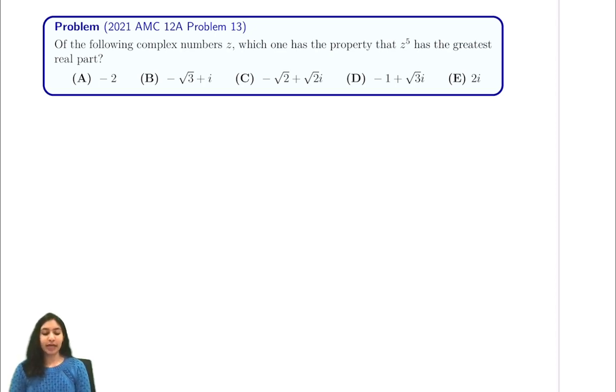This prompt says of the following complex numbers z, which one has the property that z to the power 5 has the greatest real part. So the first thing that we have to notice in this prompt is that all of these numbers have the same magnitude.